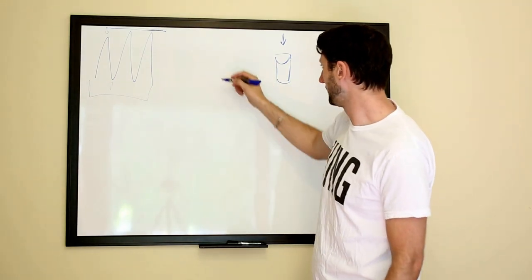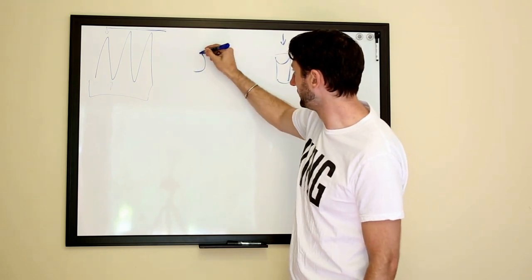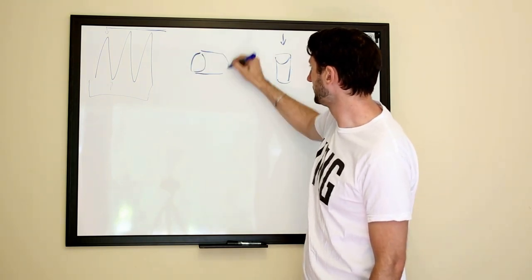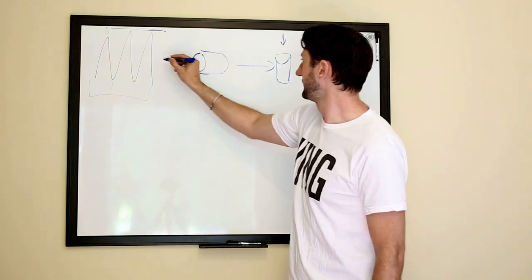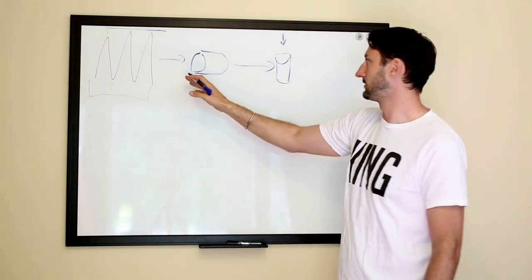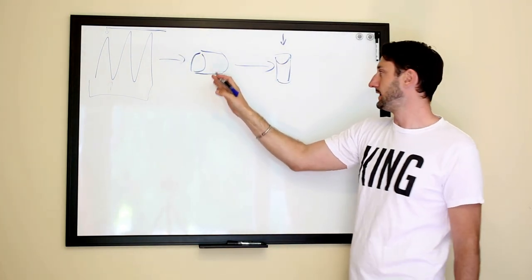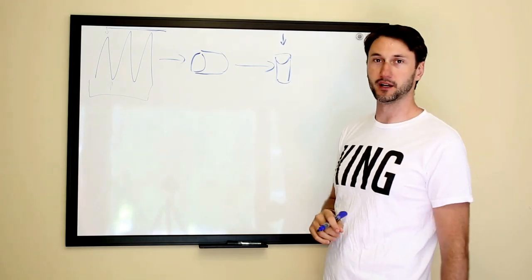But by using a queue in the middle, we can do what we call load leveling. Basically, the data flow is coming through your system, you're inserting it into a queue, and then later you're inserting it into the database.